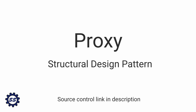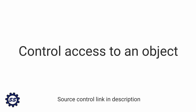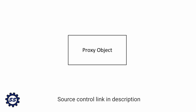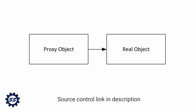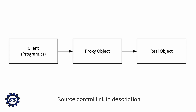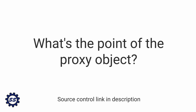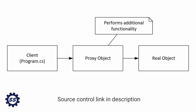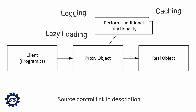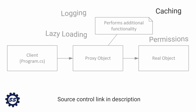The proxy design pattern is a structural design pattern that involves controlling access to an object. We're going to have a proxy object that wraps some other object, and the client has to go through the proxy object in order to access the real object. The point of this proxy object is that we can implement additional functionality such as logging, lazy loading, caching, or access permissions without having to change the real object.